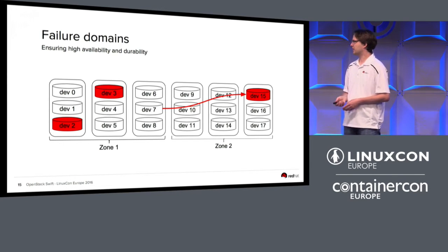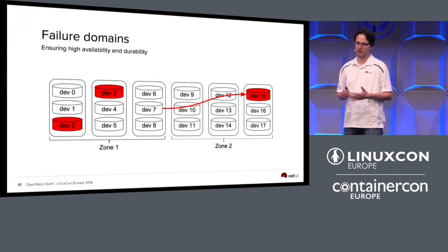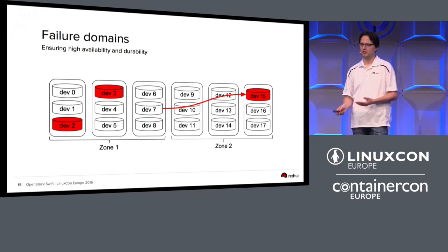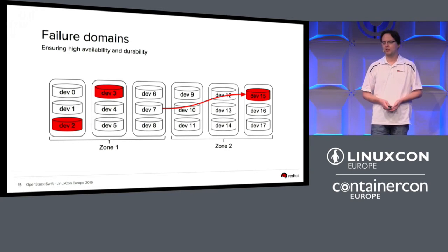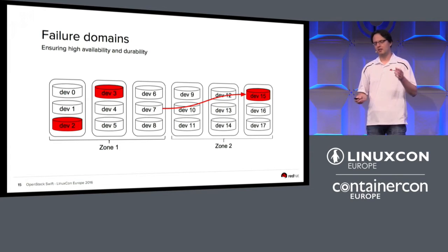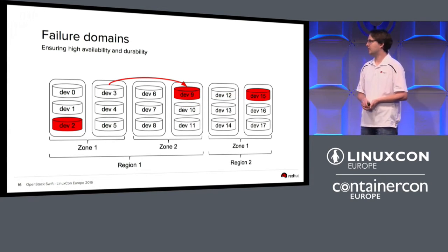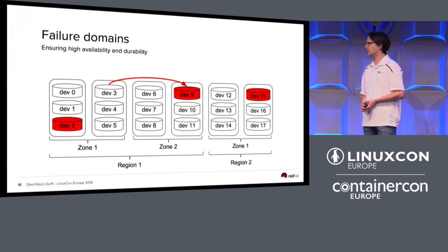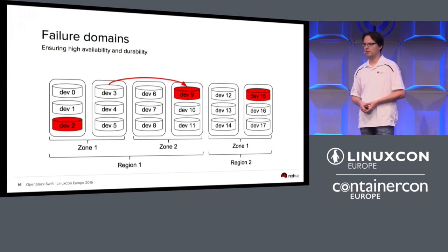It gets even better — there's also a concept called regions that you can put on top of zones. If you have multiple data centers, for example a big data center in Berlin with two floors and a smaller one in Hamburg, and you want to keep one copy in Hamburg and two copies across each floor in Berlin, you can group devices into regions. Swift will ensure that each region has at least one copy and each zone has a copy. By doing this you can easily build clusters spanning multiple data centers, multiple regions across the world — different cities or even across different countries.